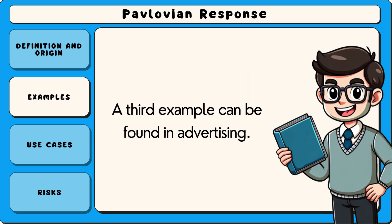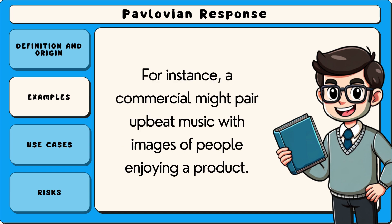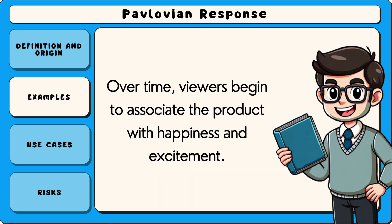A third example can be found in advertising. Companies often use Pavlovian responses to influence consumers. For instance, a commercial might pair upbeat music with images of people enjoying a product. Over time, viewers begin to associate the product with happiness and excitement.